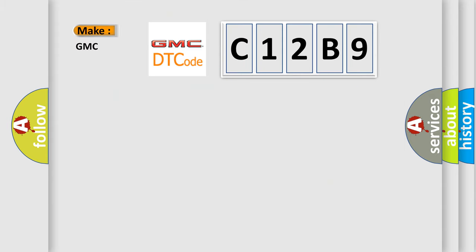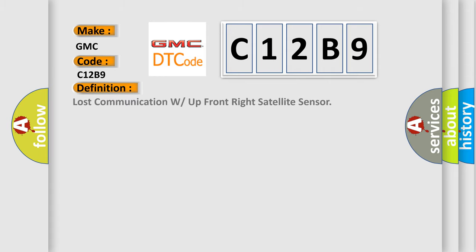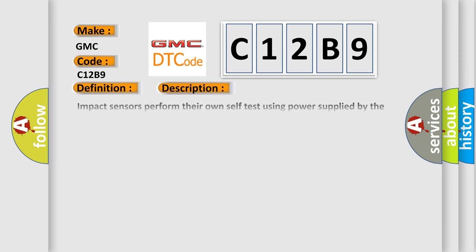So, what does the diagnostic trouble code C12B9 interpret specifically for GMC car manufacturers? The basic definition is Lost Communication With Upfront Right Satellite Sensor. And now this is a short description of this DTC code.